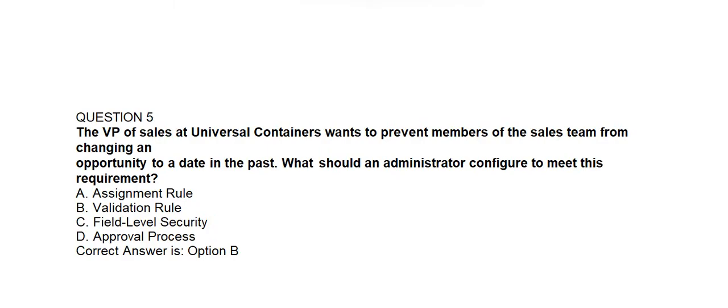Question number five. The VP of Sales at Universal Containers wants to prevent members of the sales team from changing an opportunity to a date in the past. What should an administrator configure to meet these requirements? Option A: Assignment Rule. Option B: Validation Rule. Option C: Field Level Security. Option D: Approval Process. Correct answer is Option B: Validation Rule.